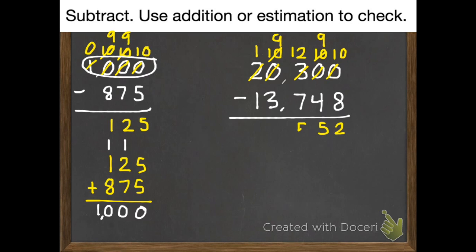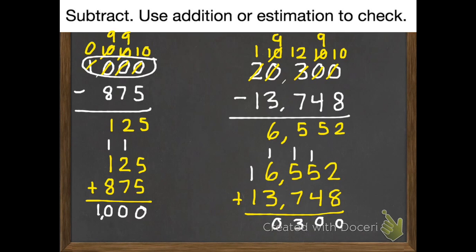Twelve subtract 7 is 5. Nine subtract 3 is 6. One subtract 1 is zero. So let's check our work. 6,552 plus 13,748 equals 20,300, which is what we wanted.